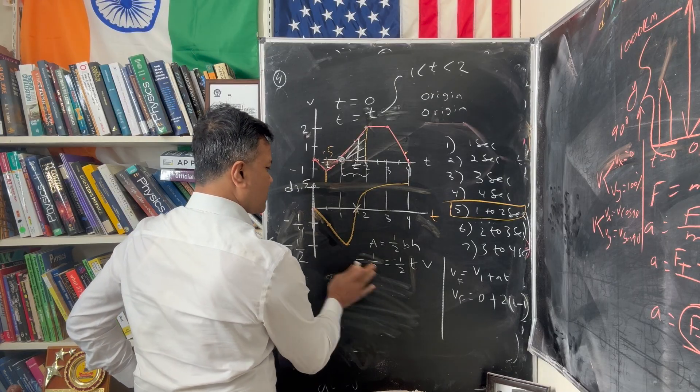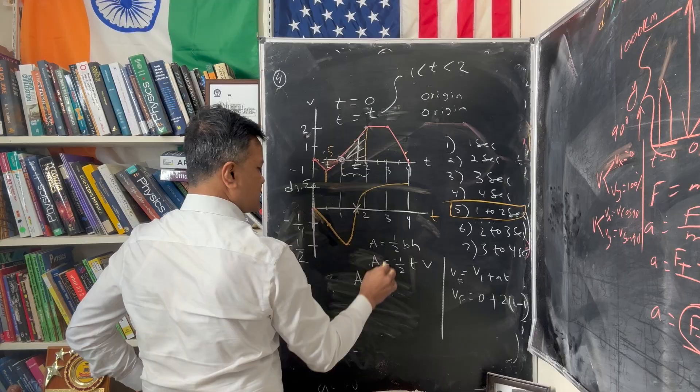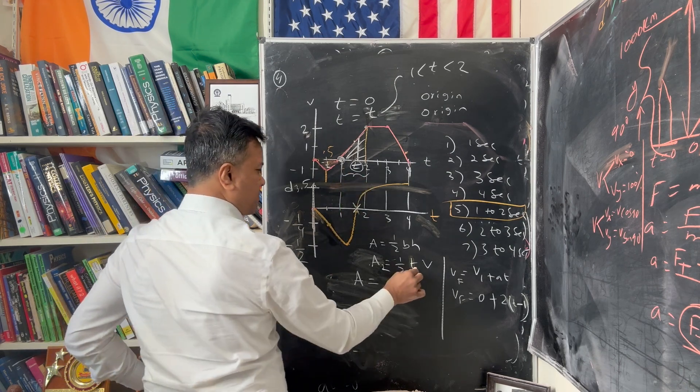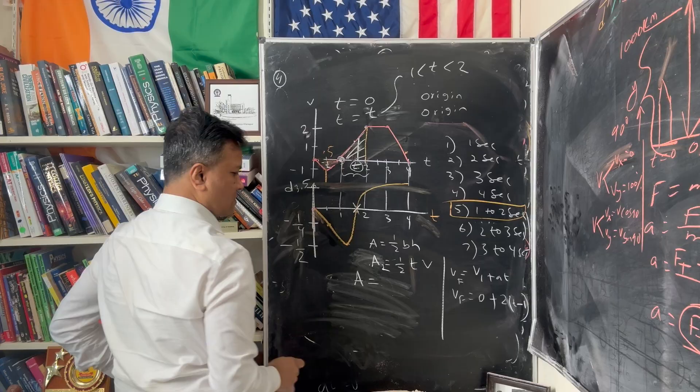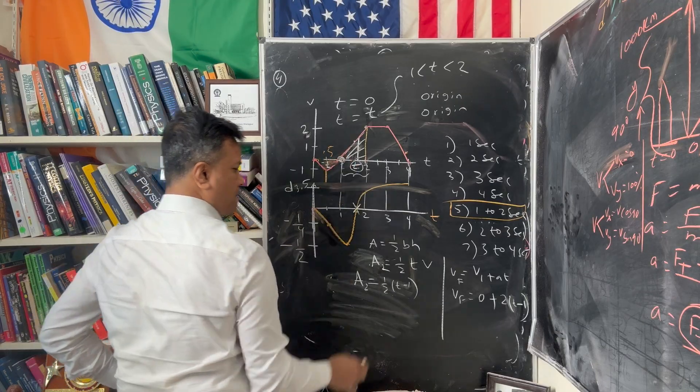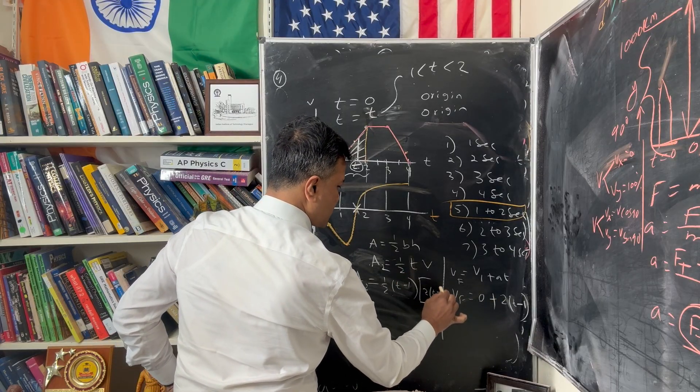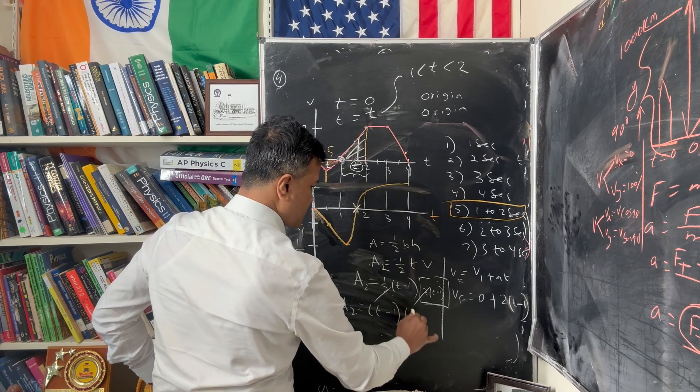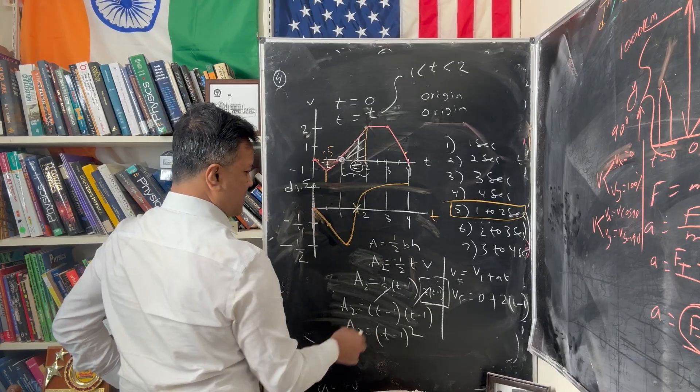This is area A2. We want to find this t. So we're not going to replace t by 2, because this t is not 2, this t is less than 2. So A2 is half times t minus 1. Why t minus 1? Because you started from 1 second. And this is the slope, which is 2 times t minus 1. So area 2 equals, the 2s cancel, t minus 1 times t minus 1. So area 2 equals t minus 1 squared.